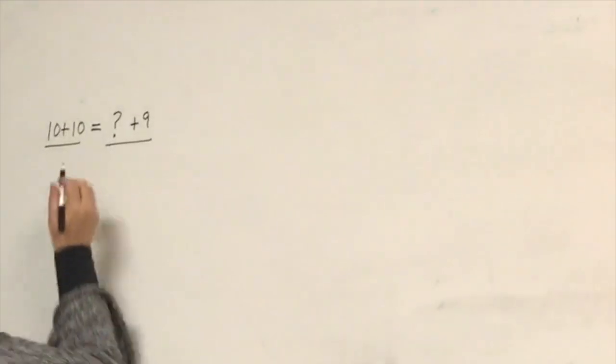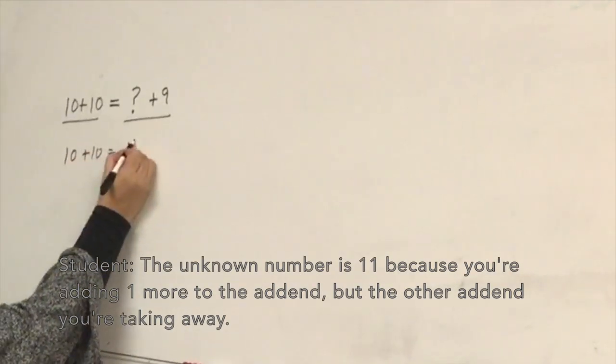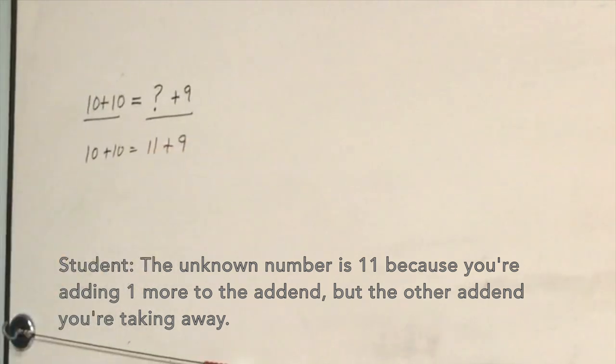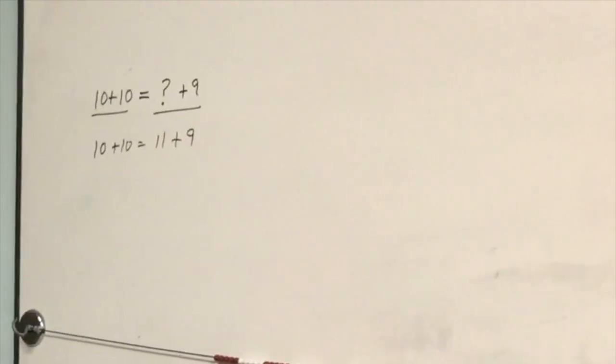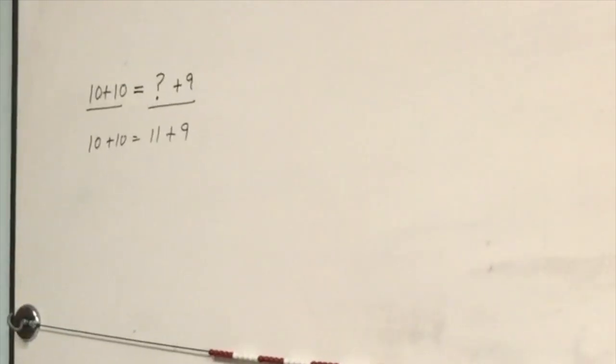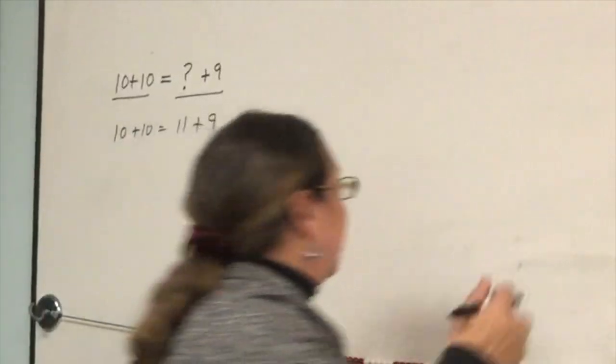The unknown number is 11. Because you added one more to the addend, and the other addend, you're taking away. What new word did you just use? Addend. Addend. How cool is that? It was so clear I could see exactly what you're saying.